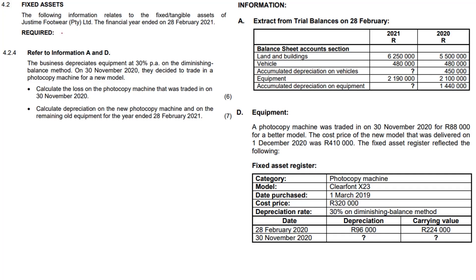This short lesson focuses on fixed assets. In this instance, we're calculating and reporting on the sale of a fixed asset. The following information relates to the fixed asset note of Just Time for financial year end 28th February 2021.